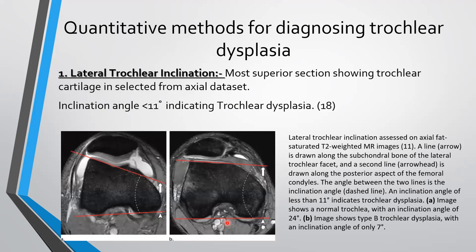Quantitative methods for diagnosing trochlear dysplasia: lateral trochlear inclination is assessed on the most superior section showing trochlear cartilage from the axial dataset. On axial fat-saturation T2 MR imaging, a line is drawn along the subchondral bone of the lateral trochlear facet, and a second line is drawn along the posterior aspect of the femoral condyles. We measure the angle between them. If it is less than 11 degrees, there is trochlear dysplasia.